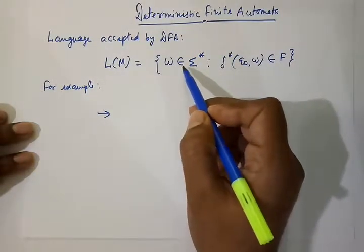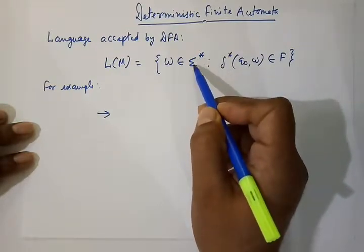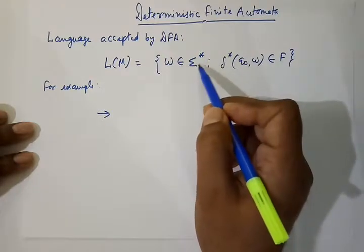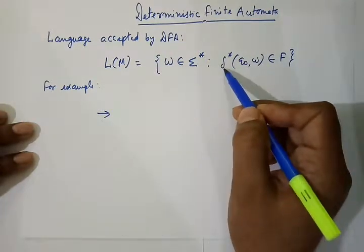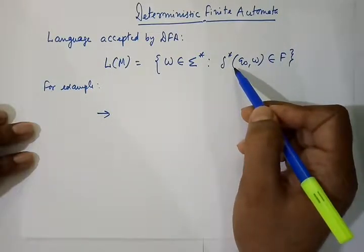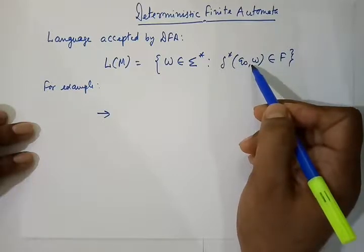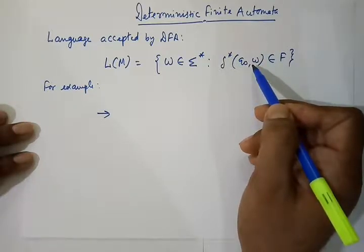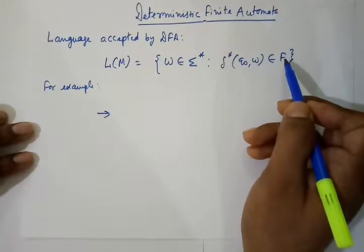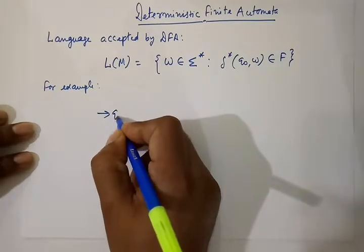W is our string and W is a combination of sigma star. Sigma star means any combination of alphabets including null. Delta is our transition function, Q0 is our start state, so at the start state we are getting this string as input. One by one we consume the alphabet symbols, and if finally we are at a final state then only we can say the given string is accepted by our DFA, otherwise it is not accepted.